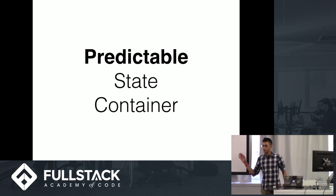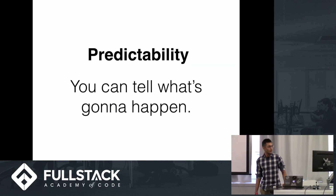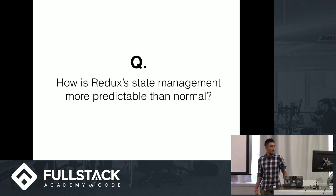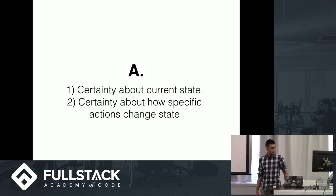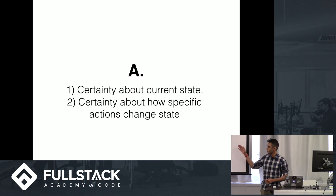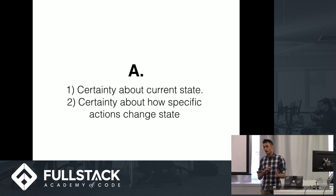So this is where predictability comes in. Predictability for Redux is basically you can tell what's going to happen — that's what predictability means. So how is Redux's state management more predictable than any other way of storing state? Basically you can be certain about your current state, and you can be certain about how specific actions you take will modify or change that state.